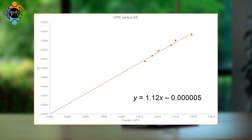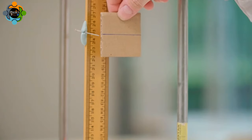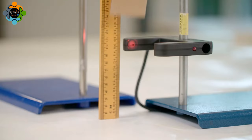The gradient of the graph is almost one, and the y-intercept is almost zero. When the piece of card is let go, the gravitational pull starts doing some mechanical work on the card, transferring some of the gravitational potential energy into kinetic energy.